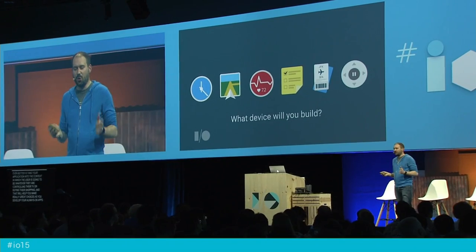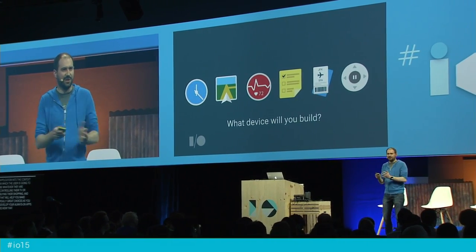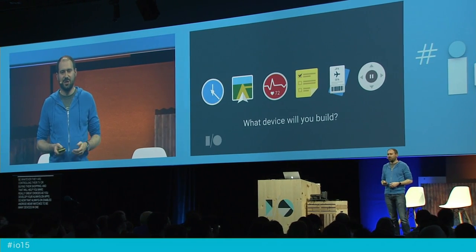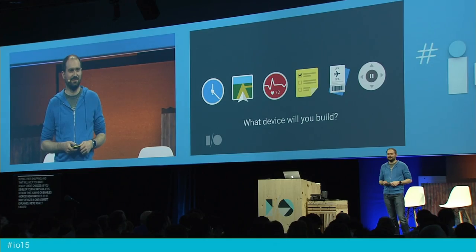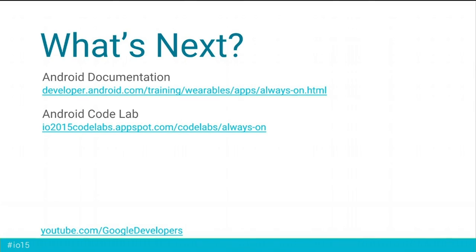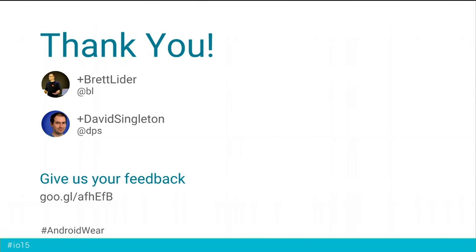Now that always-on enables Android Wear watches to be many devices in one, we're really excited to see what device you're going to build. We have documentation at developer.android.com, and we've also developed a code lab that will walk you step-by-step through the process of adding always-on functionality to a simple stopwatch application. That's the end of our talk — thank you for listening. Please give us your feedback, and we have some time for questions and answers.